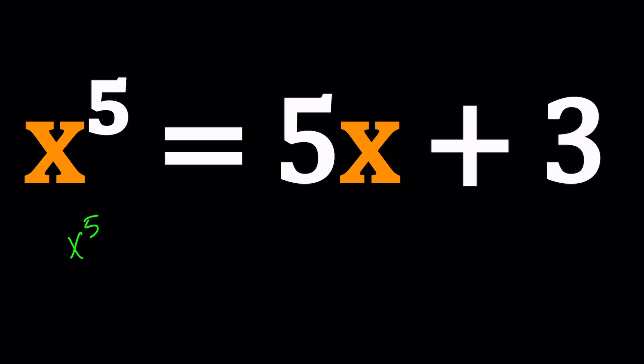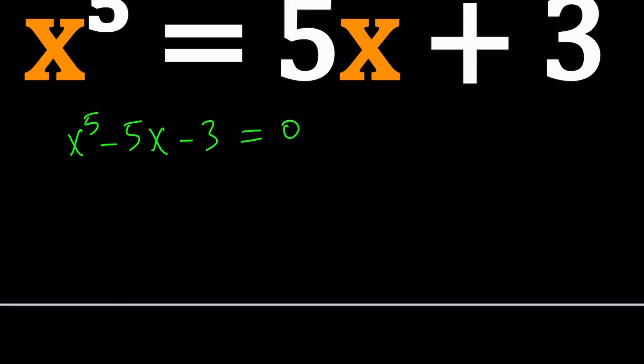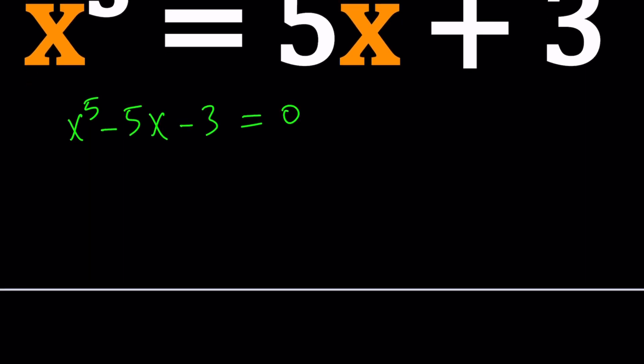Let's go ahead and put everything on the same side and I'm hoping that something that divides 3 such as plus minus 1 or plus minus 3 will be a solution. Is that possible? For example, x equals 1. Test it out. You can do 1 minus 5 minus 3 does not equal 0.